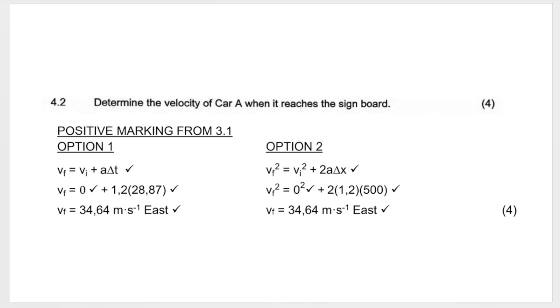They only gave two options over here. Remember to write your formula first, substitute correctly, and then your answer with unit and direction because they want velocity. Velocity is a vector, which means you need to give your direction and your answer. If you don't, you won't get your answer mark.